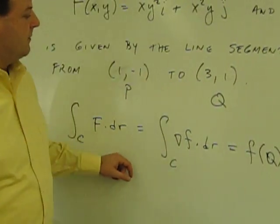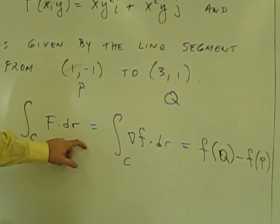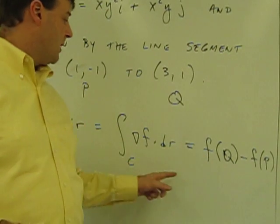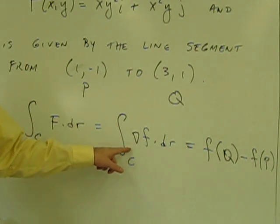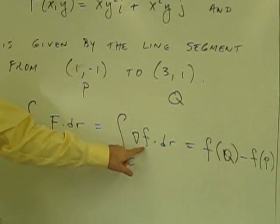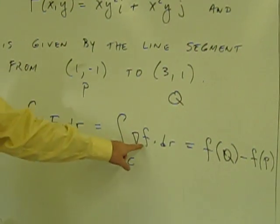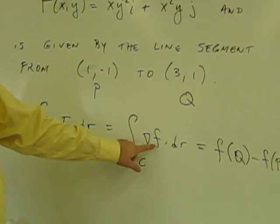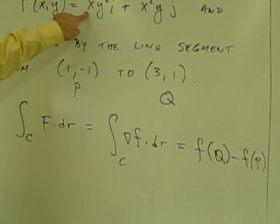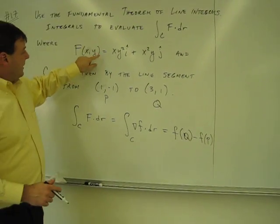The calculation of the integral boils down to just plugging in a few points once you have figured out what this F is. So that's our task — we have to find out what this F is, so that when I take the gradient of it, I get this vector field.